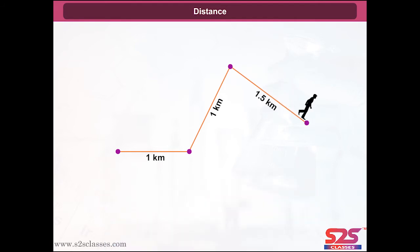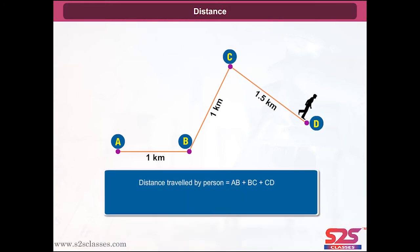For example, if a person or moving body moves from A to B one kilometer, B to C one kilometer, and then from C to D one point five kilometers, then the total distance covered by the person is equal to AB plus BC plus CD, which equals one plus one plus one point five kilometers, giving three point five kilometers.